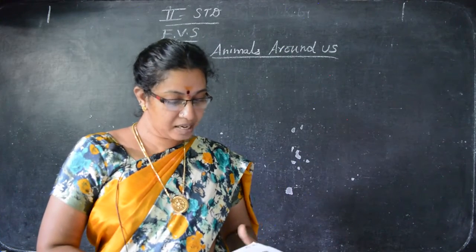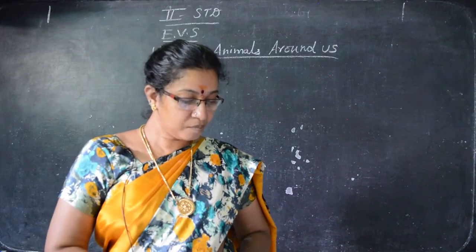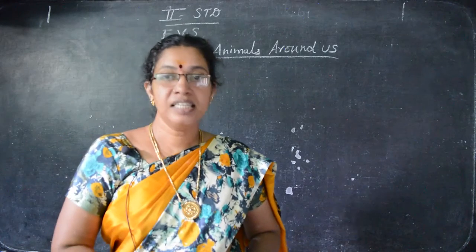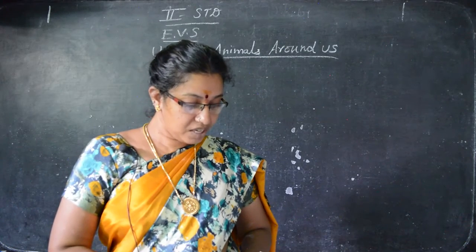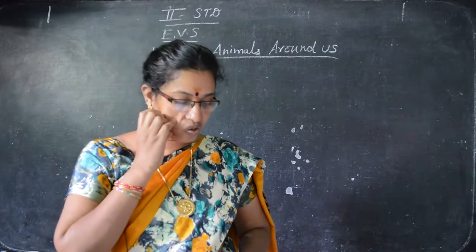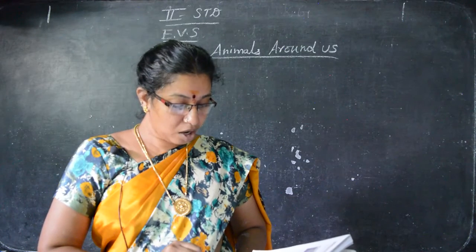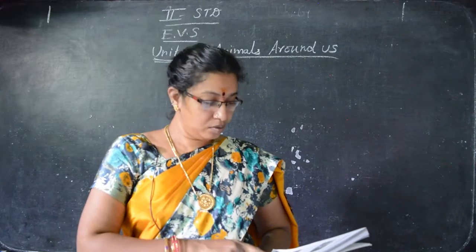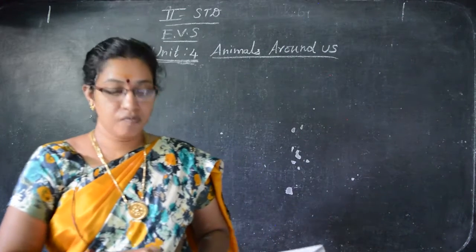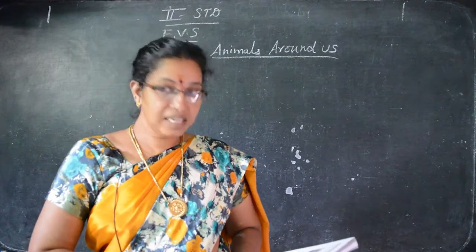Chikku then visited the hen. The hen said: 'Hello Chikku, I am a hen — H-E-N. My home is called a coop — C-O-O-P. My young one is called a chick — C-H-I-C-K. People rear us for our eggs and meat. Turkeys and ducks are also reared for their eggs and meat.'